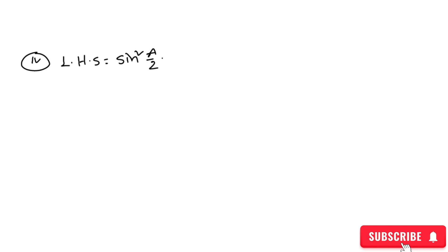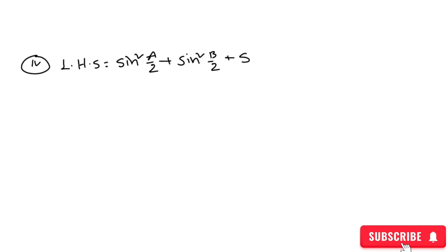What is sin(a/2)? Let's see the left-hand side. We have sin²(a) — sin²(a/2) — plus sin²(b/2) plus sin²(c/2). So we have 2 sin²(a/2).